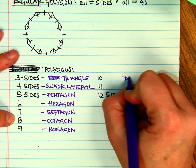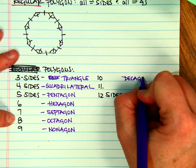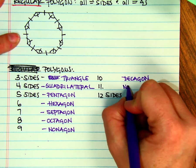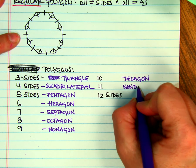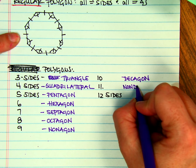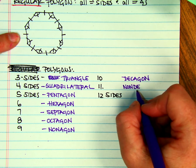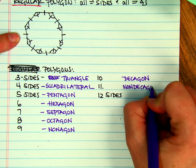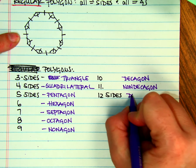Ten is a decagon. Eleven is a non-decagon. I believe twelve is called a dodecagon.